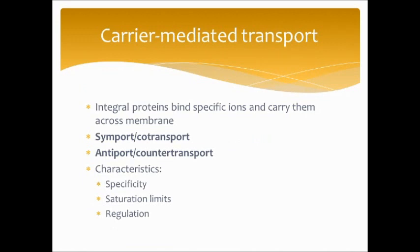Still on passive transport: in carrier-mediated transport, integral proteins bind specific ions and carry them across the membrane. In symport or co-transport, two different molecules or ions travel in the same direction. In antiport or counter-transport, two different molecules or ions pass in opposite directions. Each carrier protein binds certain substances and has saturation limits — availability limits transportation rates. They also tend to be regulated by cofactors and hormones.